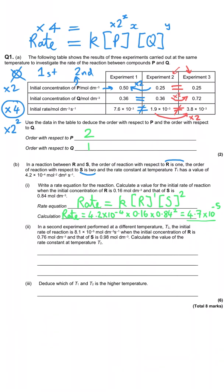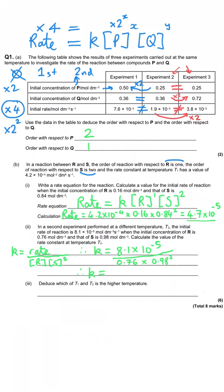The question then describes a second experiment at a different temperature T2, giving a new initial rate of 8.1×10⁻⁵, with [R] = 0.76 and [S] = 0.98. We need to calculate the rate constant at T2 by rearranging the rate equation: k = rate ÷ ([R] × [S]²). Substituting those values in gives a rate constant of 1.1×10⁻⁴.